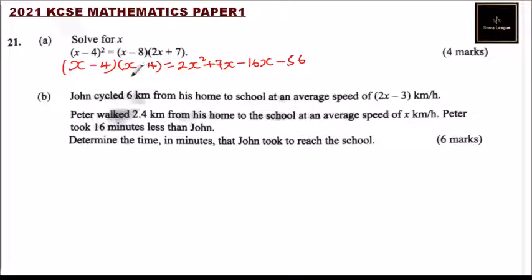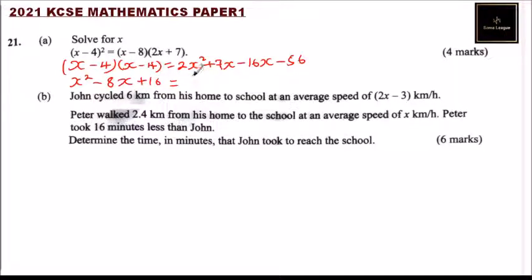Expanding the left side: x multiplied by x gives x squared, minus 4x minus 4x adds up to minus 8x, plus 16. This equals 2x squared, and on the right side 7x minus 16x gives minus 9x, minus 56.